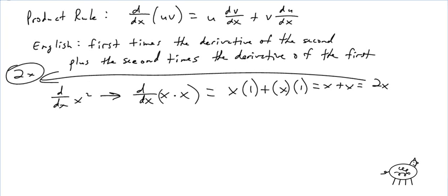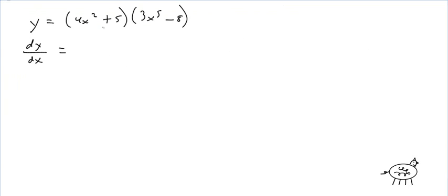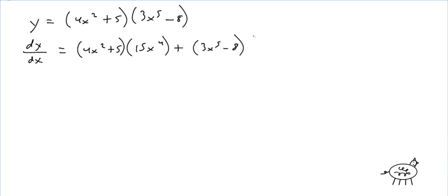So let's try a nice little friendly example. You have y = (4x² + 5)(3x⁵ − 8). So dy/dx is the first times the derivative of the second, which is 15x⁴, plus the second — 3x⁵ − 8 — times the derivative of the first, which is 8x.